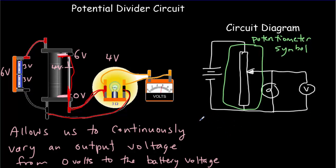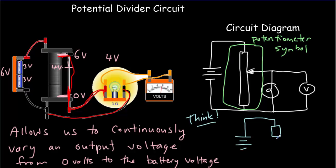When thinking about how a potentiometer works, consider this equivalent circuit. We've still got our battery, but there's a certain amount of resistance above the slider, and then our load resistor is connected in parallel to the resistance below the slider. So essentially we've got a compound circuit — one we've already studied many times — with a single resistor in series with two resistors in parallel.